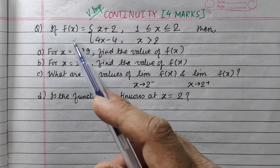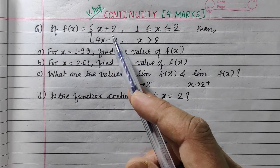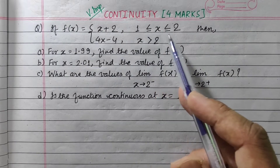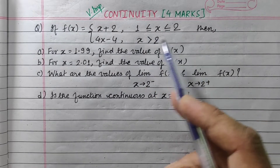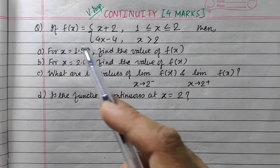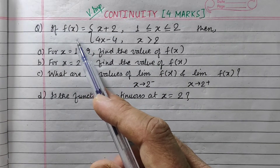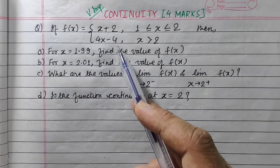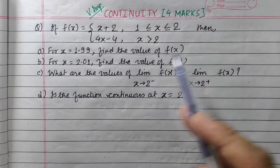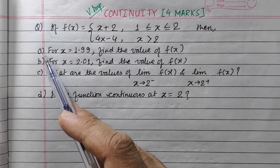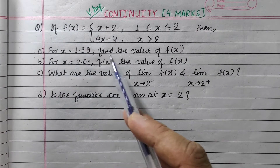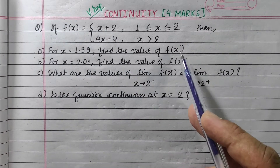If f(x) is equal to x plus 2, when x is greater than or equal to 1 or less than or equal to 2, and if x is greater than 2, f(x) is equal to 4x minus 4. For x equals to 1.99, find the value of f(x).